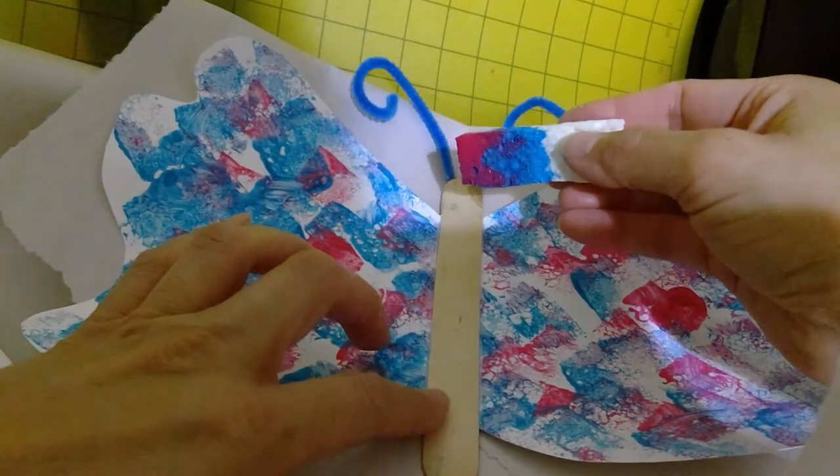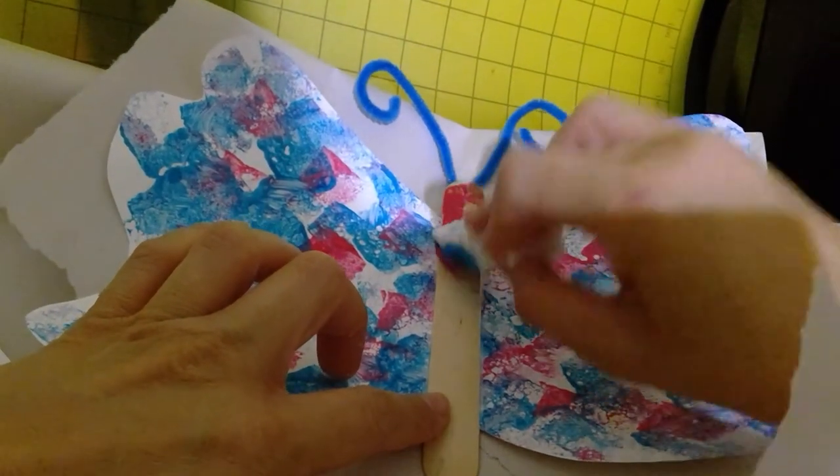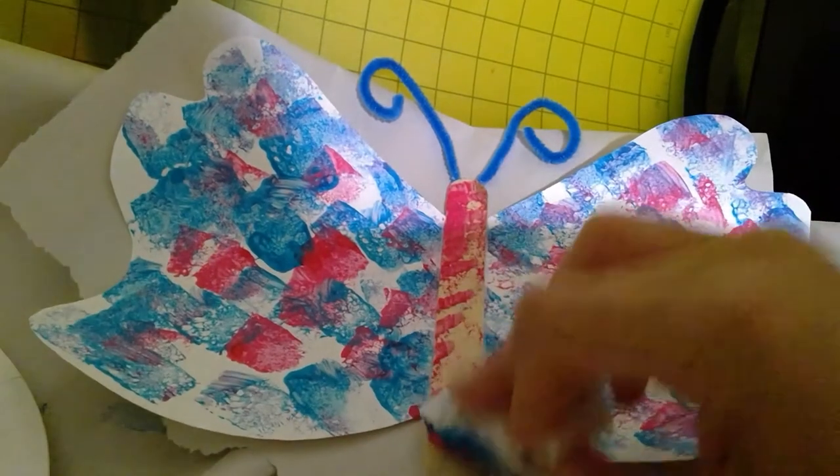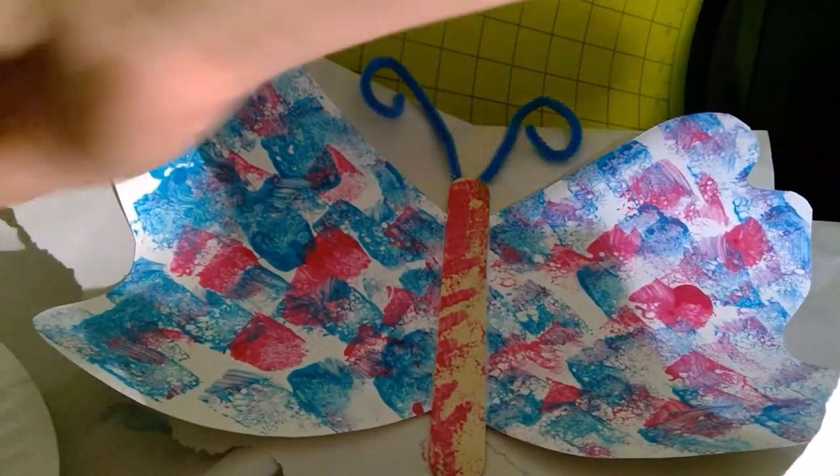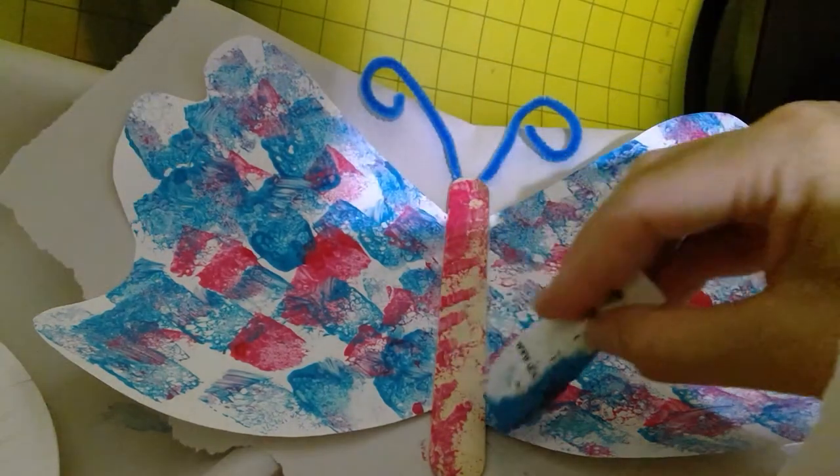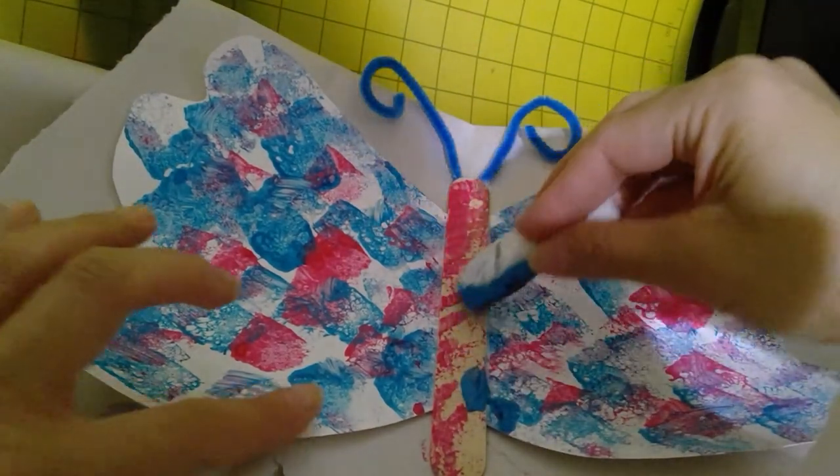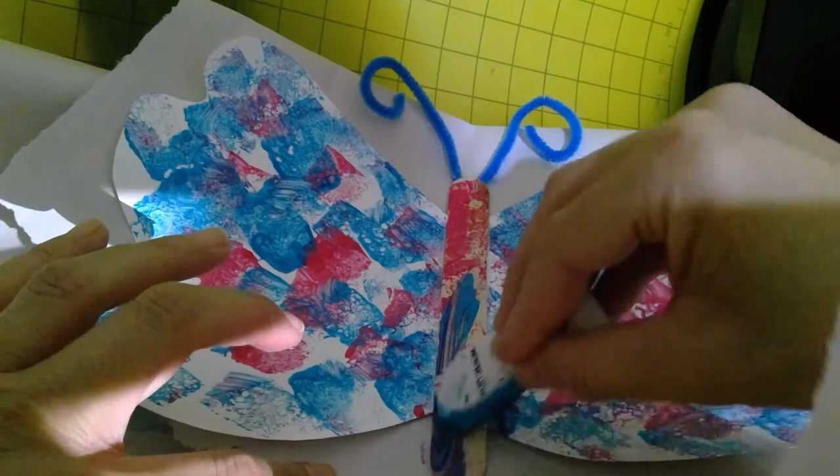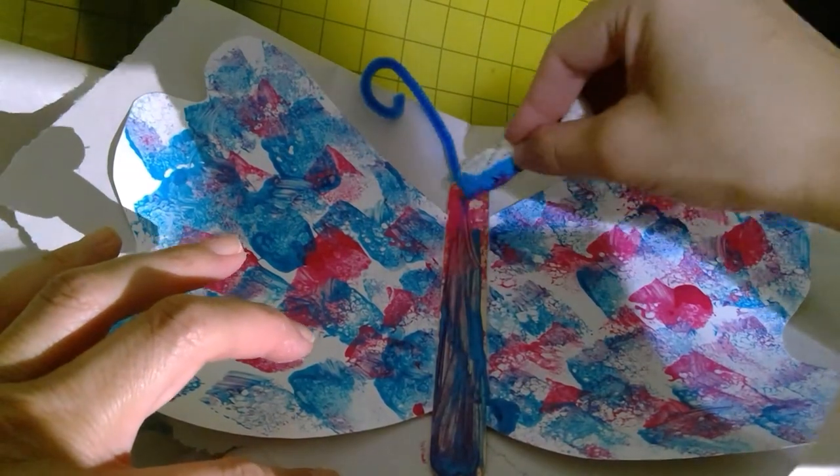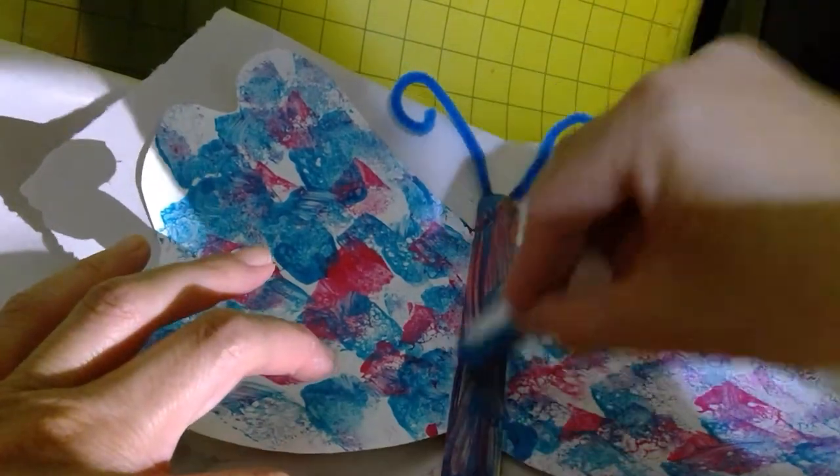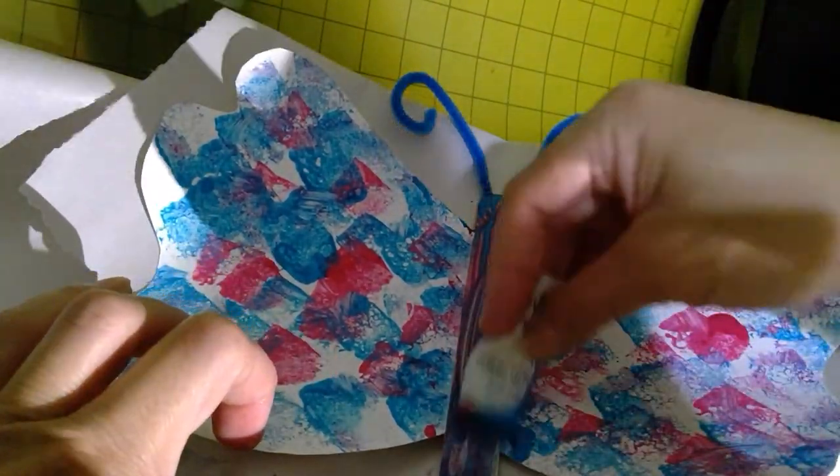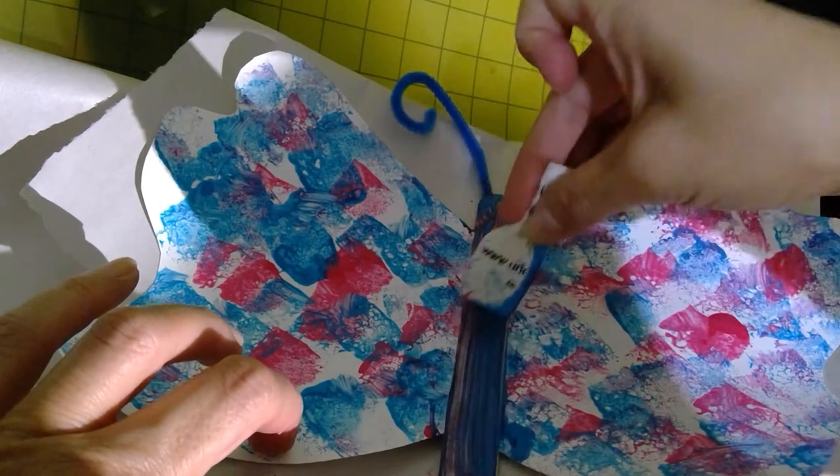Now before we finish, we want to just go over the stick with some paint. We're gonna paint it. You could either use a little brush, a paintbrush if you have a paintbrush, if not you could just paint it with your little sponge as well.